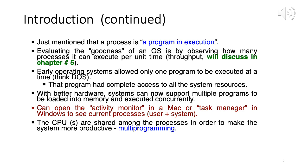With better hardware, systems can now support multiple programs to be loaded into memory and executed concurrently — this is the multiprogramming concept we discussed. You can have multiple programs brought into memory and juggle execution among all of them. If a process is doing IO, you can give the CPU to another process and it can execute. To get a snapshot of how your various system resources are being used, there are several tools available.